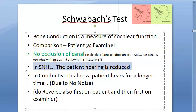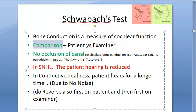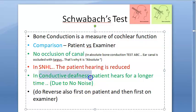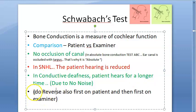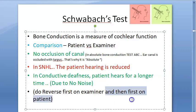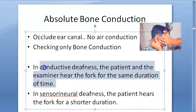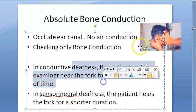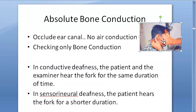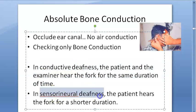In sensorineural hearing loss, the patient's hearing is reduced — this is a comparison test. An interesting point: in conductive deafness, the patient hears for a longer time via bone conduction because there is no noise interference. For ABC test procedure, you first test on the examiner, then pass it to the patient. In conductive deafness, both the patient and examiner hear the fork for the same duration, since occluding the canal creates similar conditions for both.